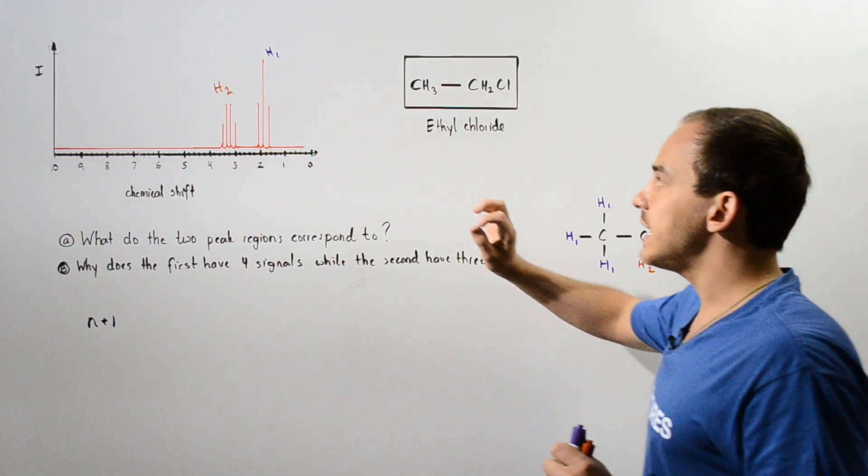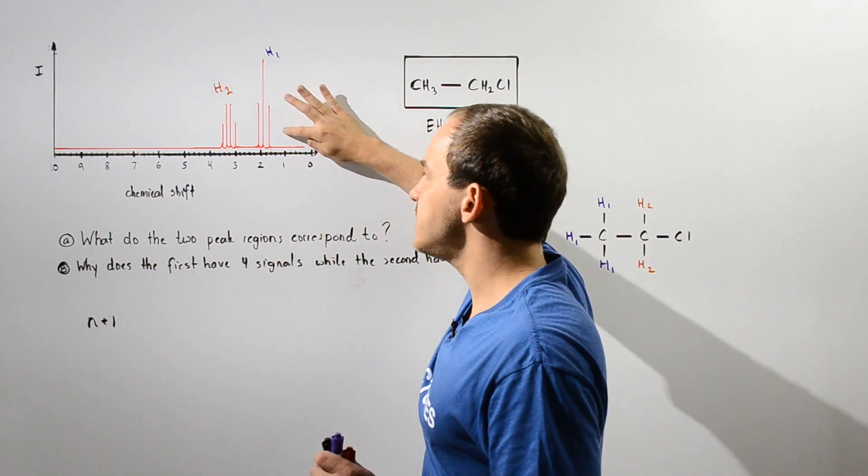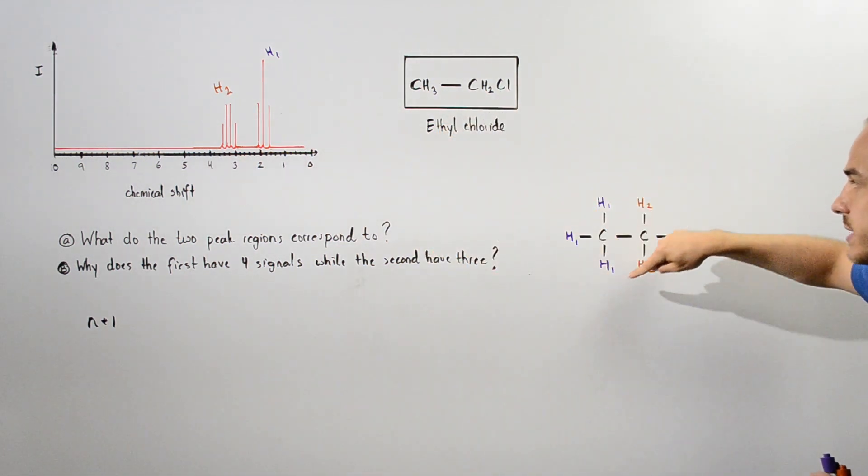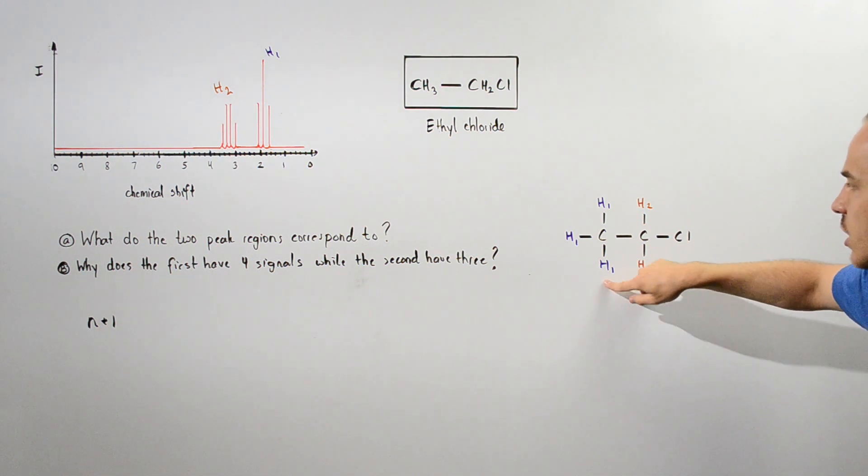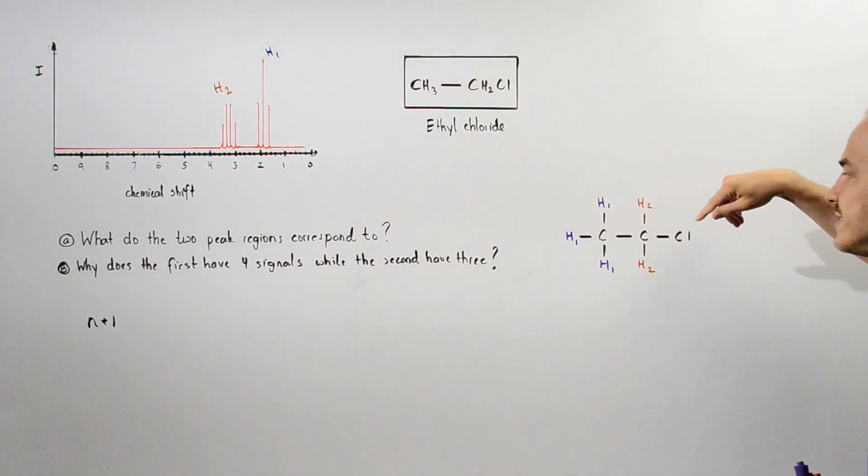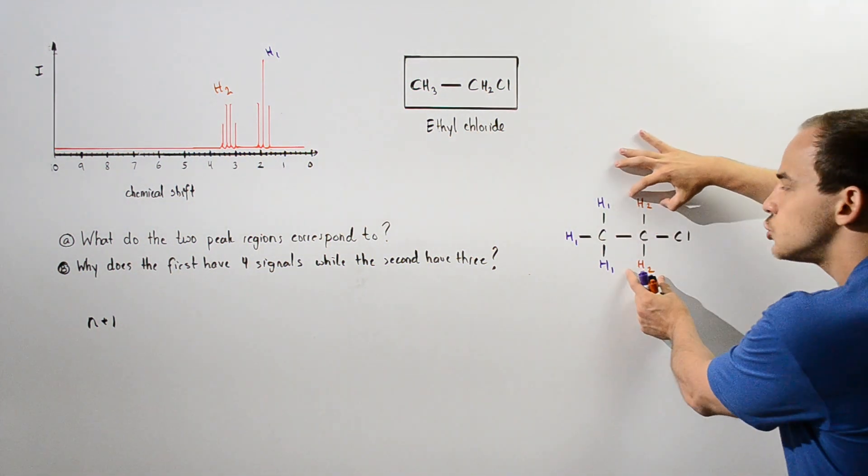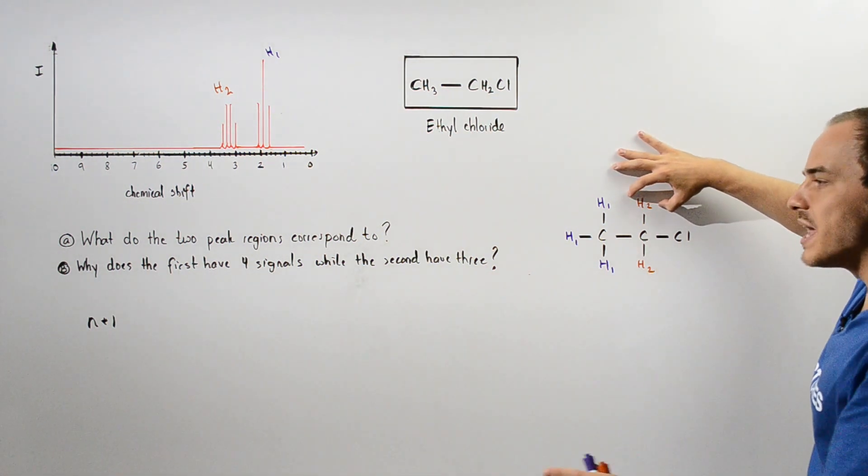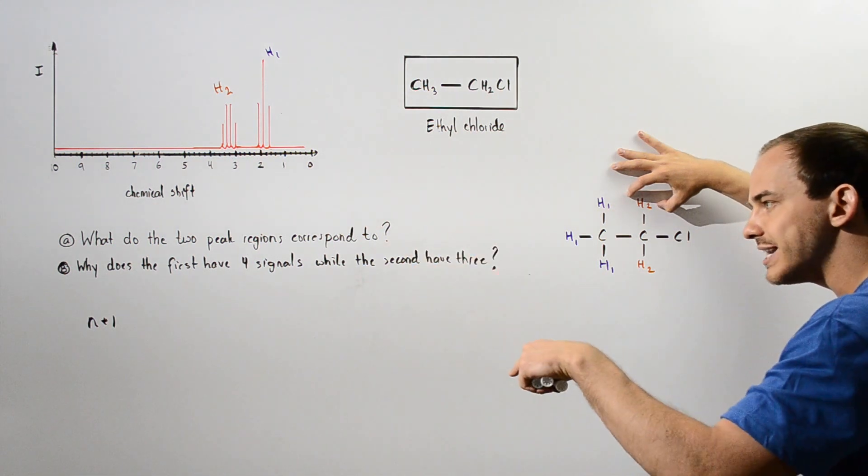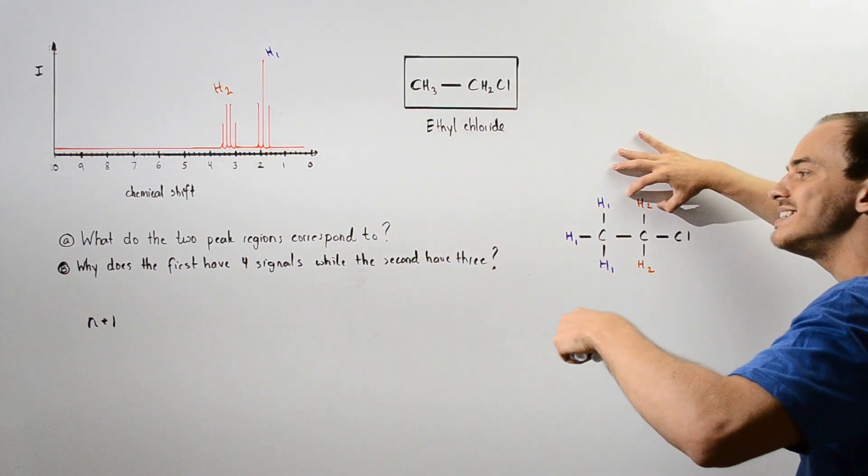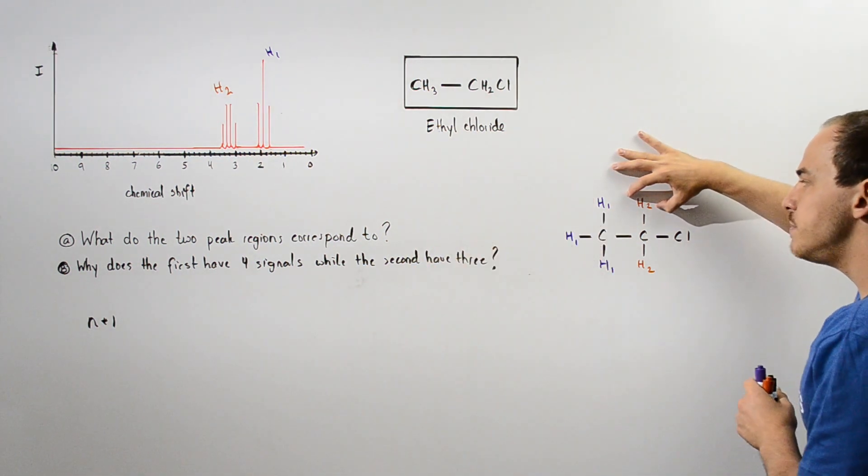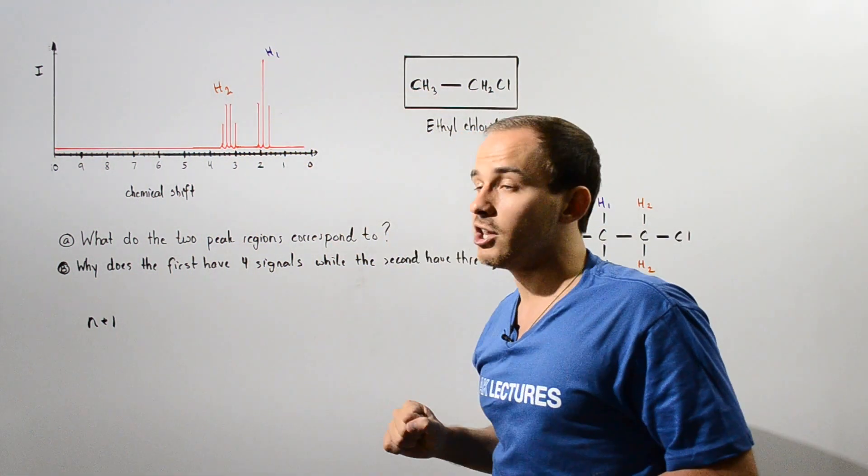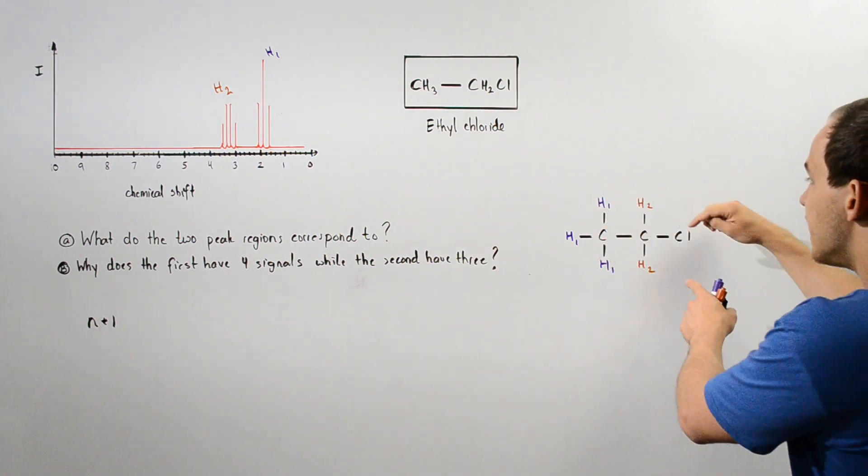So let's begin with this region. This region consists of three peaks. Now if we examine either one of these H atoms, the adjacent carbon contains two identical H atoms, and that means n is equal to 2, and n plus 1 equals 2 plus 1, which is equal to 3.